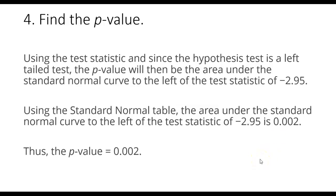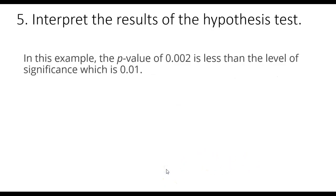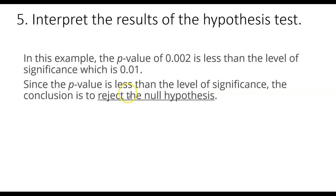Now that I have my p-value, I can go ahead and interpret the results of this hypothesis test, remembering that if the p-value is less than your level of significance, you're going to reject the null hypothesis. In this example, our p-value of 0.002 is less than our level of significance, which we know is 0.01. So since the p-value is less than the level of significance, the conclusion is to reject the null hypothesis.